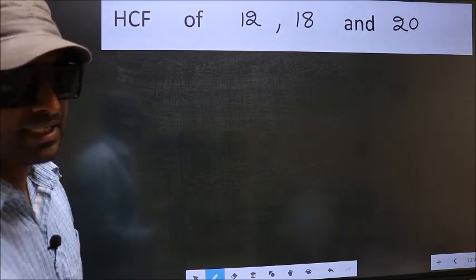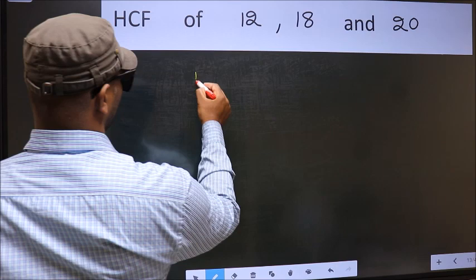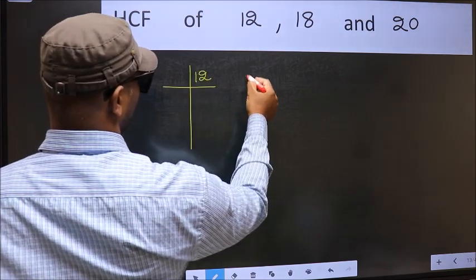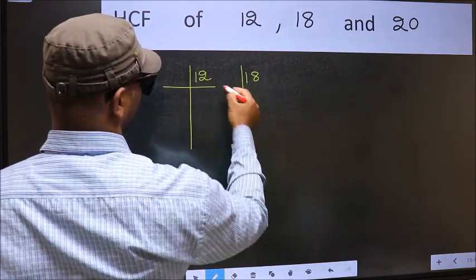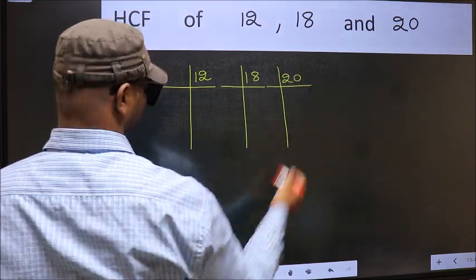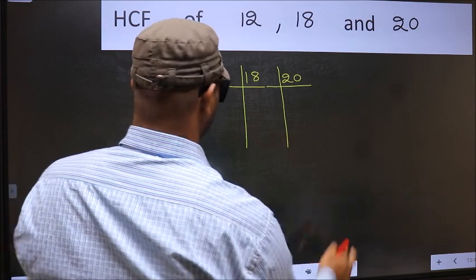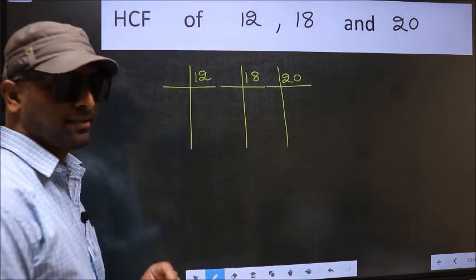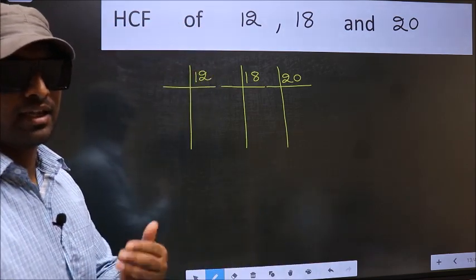What I mean is 12, 18, 20. This is your step 1. Next.